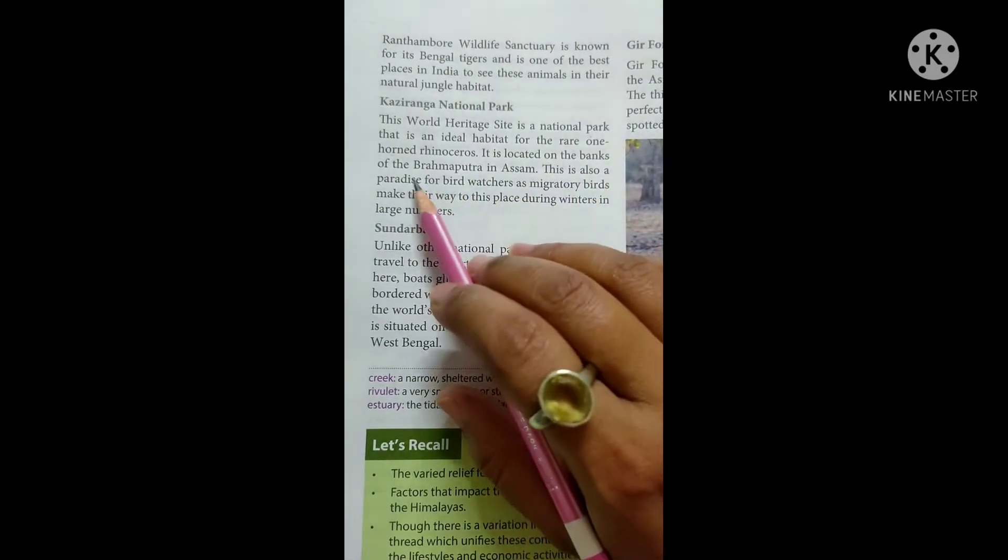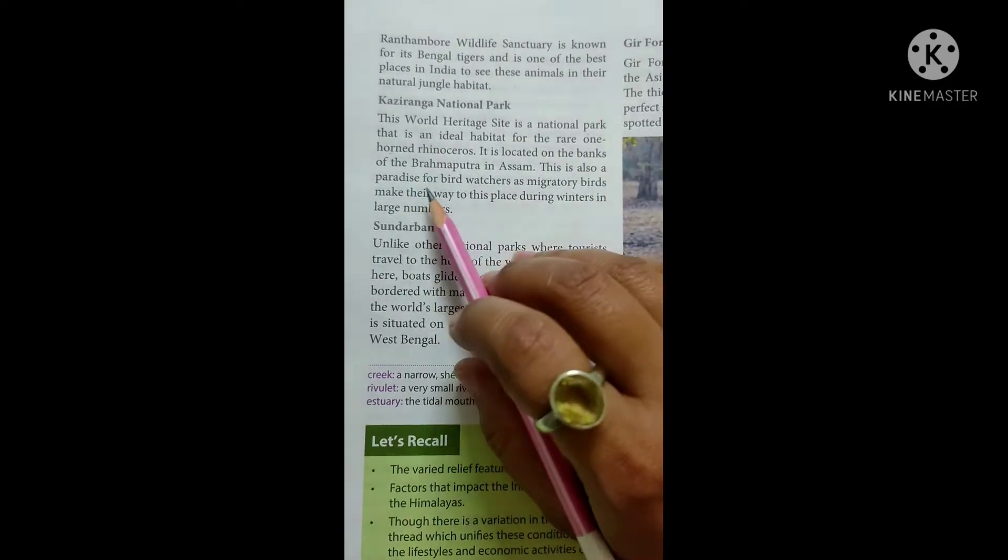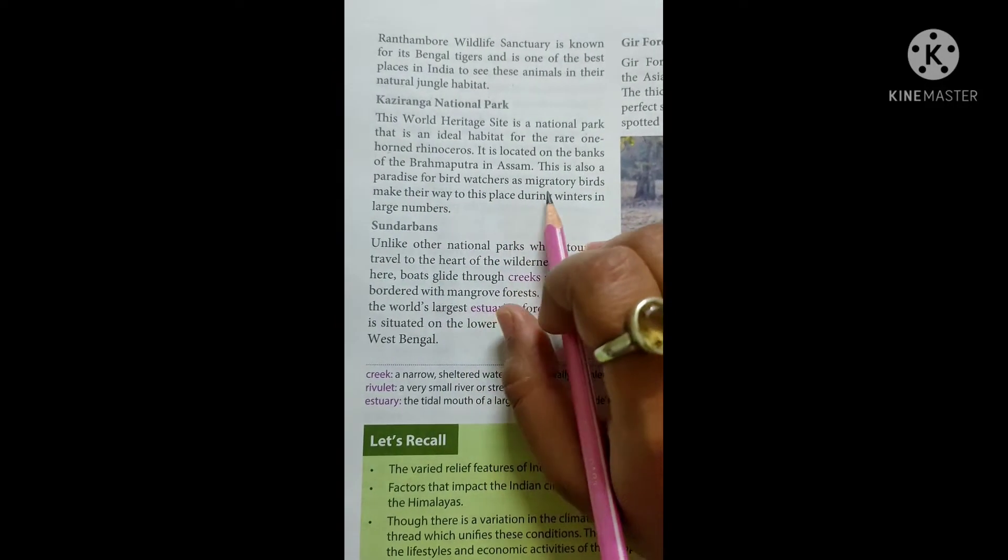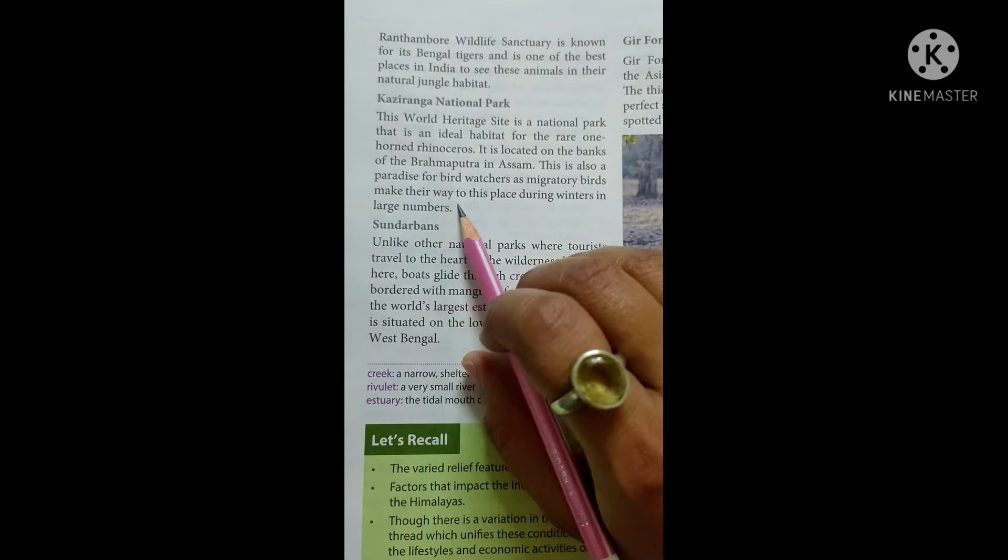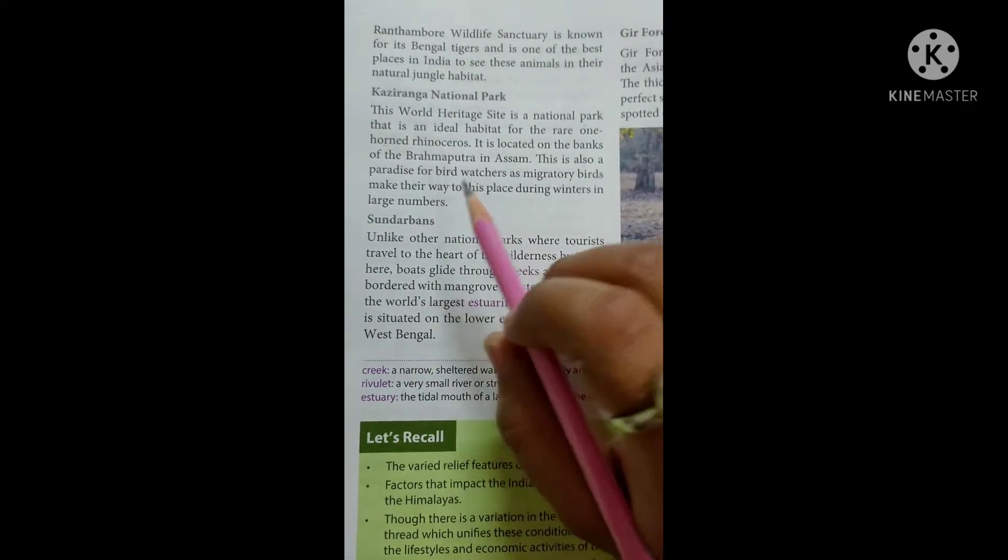It is located on the banks of the Brahmaputra in Assam. This is also a paradise for bird watchers as migratory birds make their way to this place during winters in large numbers.